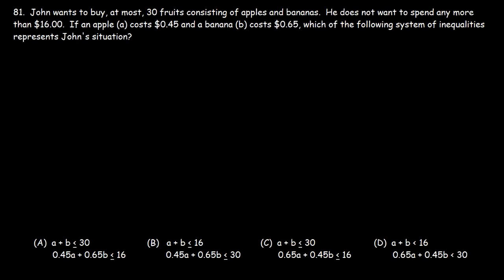Problem 81: John wants to buy at most 30 fruits consisting of apples and bananas. He does not want to spend any more than $16. If an apple costs $0.45 and a banana costs $0.65, which of the following system of inequalities represents John's situation?